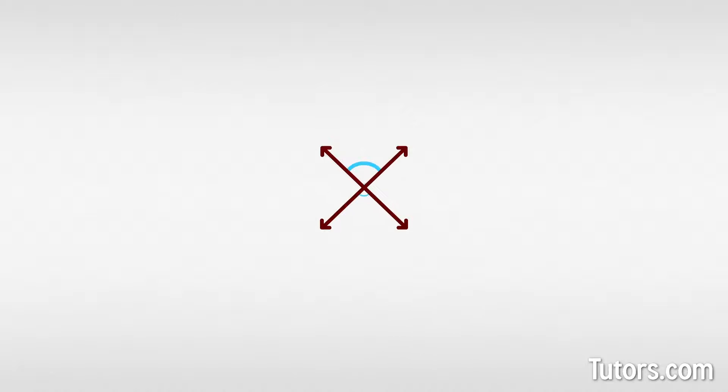These two angle pairs are congruent, meaning they have the same measure: vertical angles and right angles.